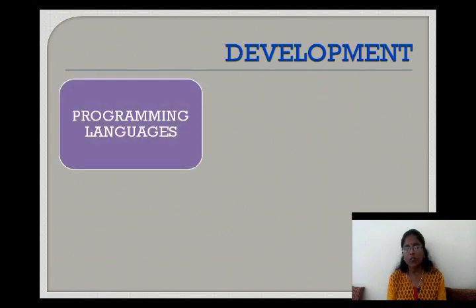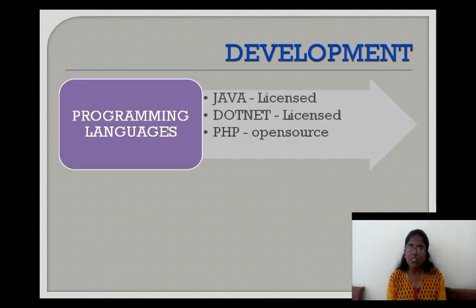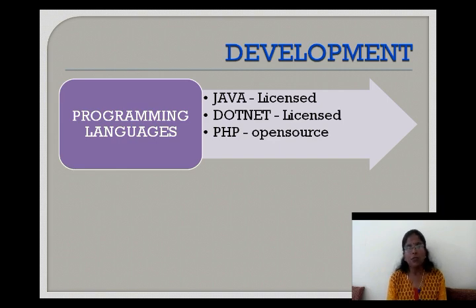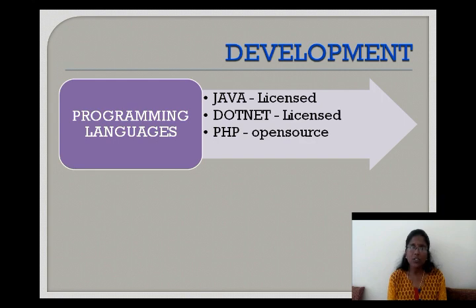We have many programming languages for development. Some of the programming languages are Java, .NET, and PHP. Whatever is preferred by the client, we can use it, or whatever language we are using in our company, we develop the applications based on that. Among those three languages, Java and .NET are licensed applications — we need to get a license for commercial purposes. PHP is an open source programming language, which is free to download, anyone can use it, it is a non-licensed language.